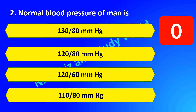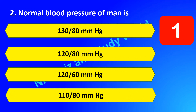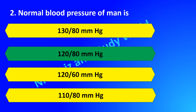Normal blood pressure of a man is dash. Is it 130 by 80 mmHg, 120 by 80 mmHg, 120 by 60 mmHg, or 110 by 80 mmHg? The answer is 120 by 80 mmHg.